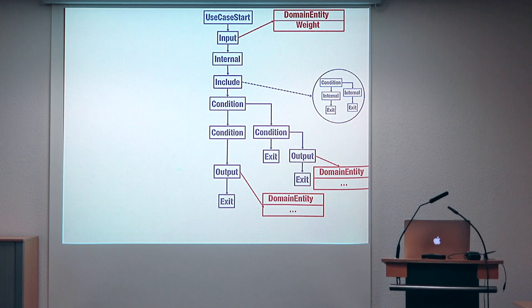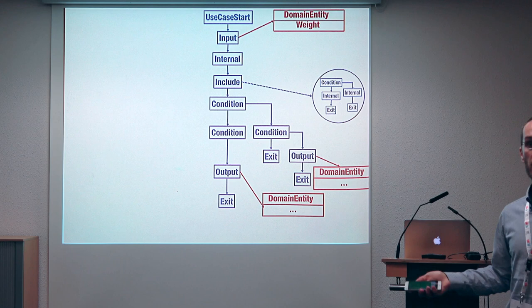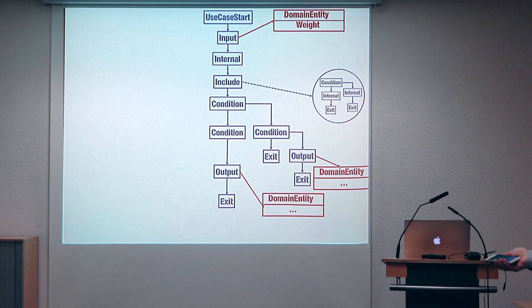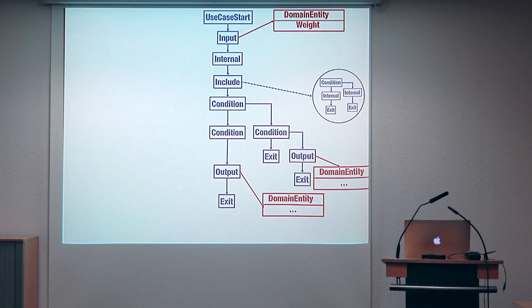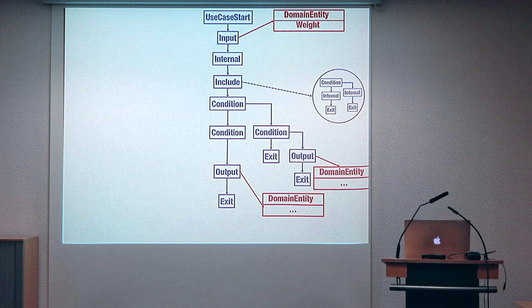With all this information we can derive a model of the expected behavior of the system. This model captures the control flow that is implicitly described in the use case specification. In this model you can see that you have the sequences of steps from the specification — the input, the internal step, the inclusion, several conditions with different branches, with some information attached. For example, you have information about the fact that the input step includes a domain entity, indicating that a domain entity — the weight — is going to be sent to the system.